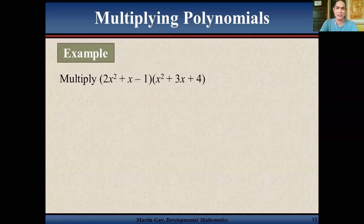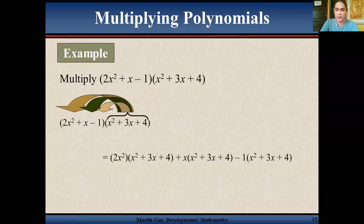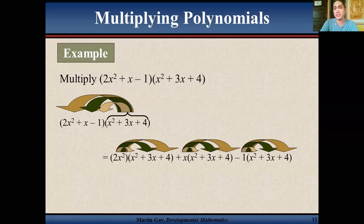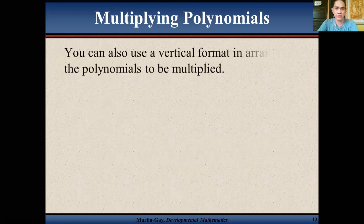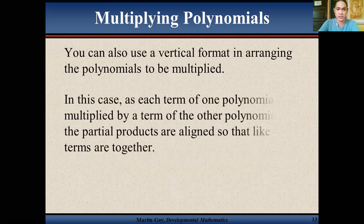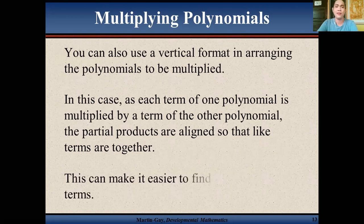Now, trinomial by a trinomial — same thing, distribute: (2x² plus x minus 1)(2x² plus 3x plus 4). Follow the arrows applying the distributive property, combine like terms, and you'll get 2x⁴ plus 7x³ plus 10x² plus x minus 4. You can also use a vertical format when arranging polynomials to be multiplied, which aligns partial products so that like terms are together, making it easier to combine them.